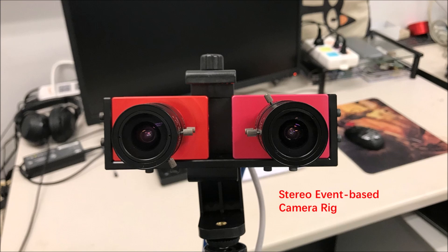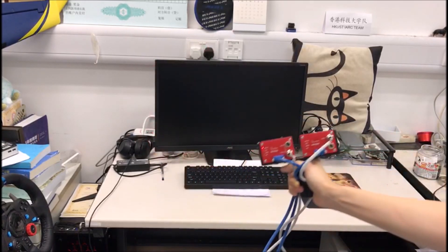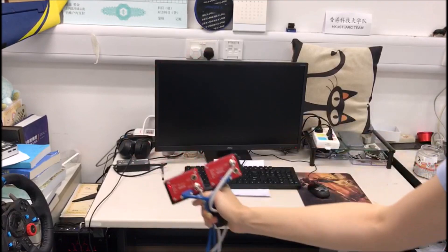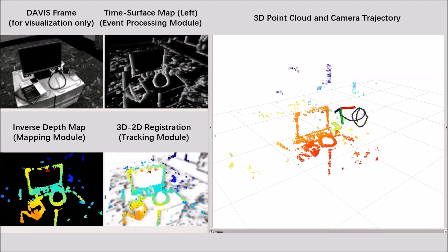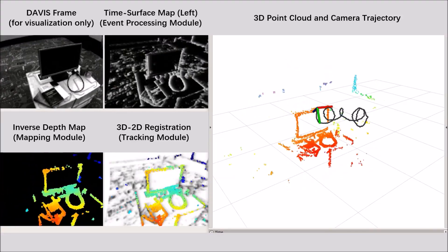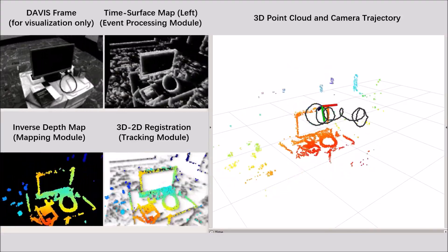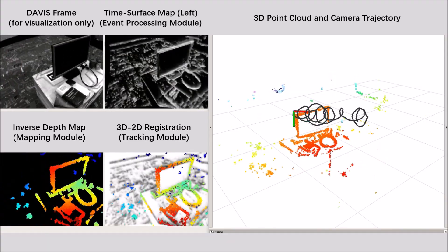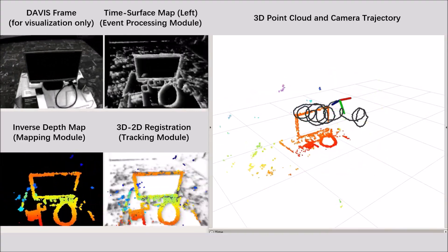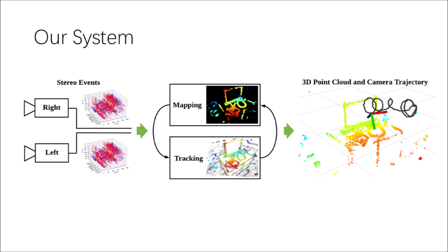We present event-based stereo visual odometry in this work. The proposed system takes as input the asynchronous data acquired by a pair of event cameras in stereo configuration, and recovers the motion of the cameras as well as the semi-dense map of the scene. It exploits spatial-temporal consistency of events across image planes to solve both localization and mapping sub-problems of visual odometry. The system runs in real-time on a standard CPU.